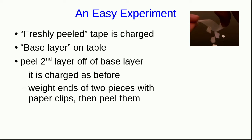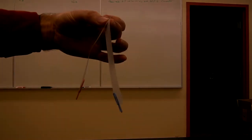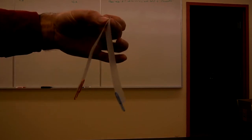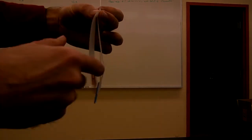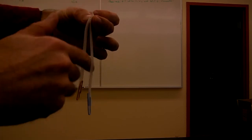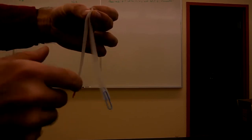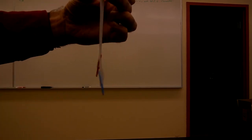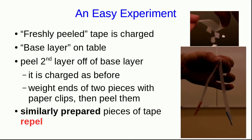But now, do a relatively delicate operation. Prepare two pieces of tape this way. Weight the ends with paper clips, then peel them off. Then you find that they repel each other. We haven't seen that before. We haven't seen that charged objects will repel. But these two pieces of tape repel each other. And if you touch them, as before, you can make them discharge, and this repulsive interaction between the freshly peeled tape will go away.